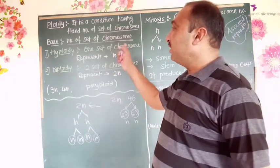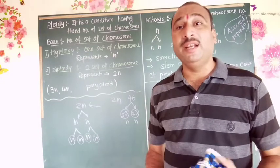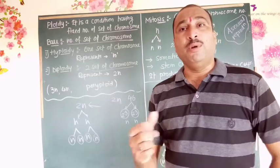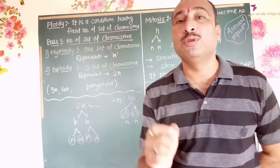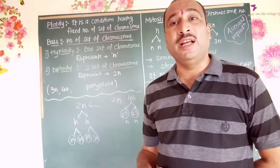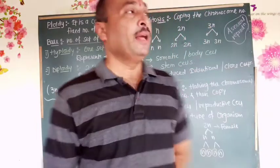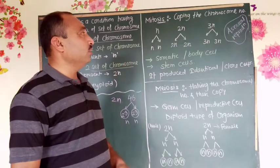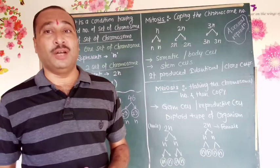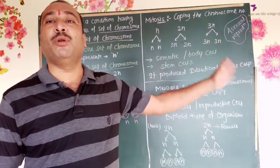To recap: there are many different types of ploidy. Haploidy — the organism is called a haploid organism and contains only one set of chromosomes. Diploid is 2 sets. Triploid is 3 sets, and so on. Five or more sets is the polyploid condition. Cell division is of 2 types: mitosis and meiosis. In mitosis, the chromosome number is simply copied and remains the same.